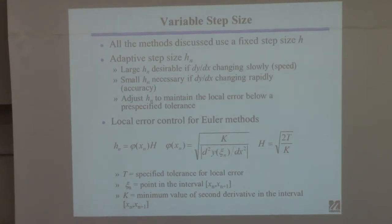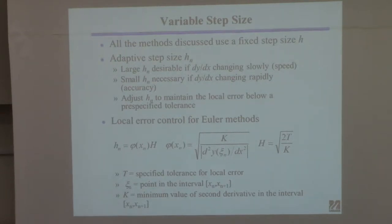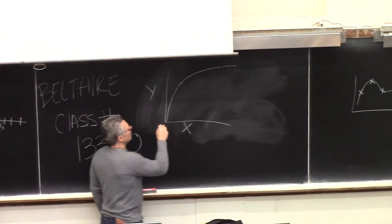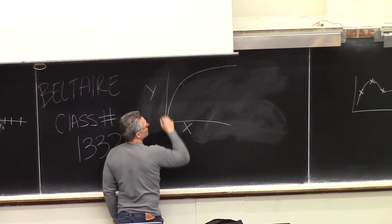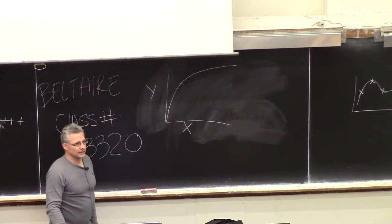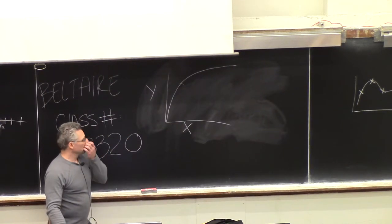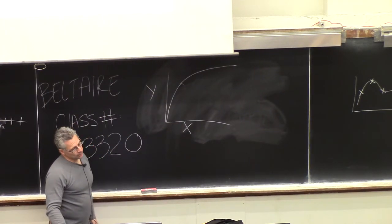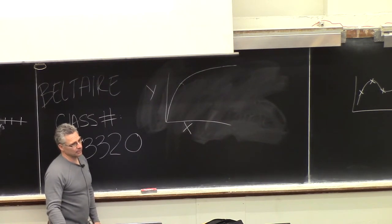You're in a quandary: if you use a small step size everywhere, you'll resolve the rapidly-changing part accurately but it'll be too slow where the solution isn't changing much. If you use too large a step size, it'll be fast but the solution will be very inaccurate in the rapidly-changing region. So most modern codes — in fact all codes worth anything — use something called a variable step size.